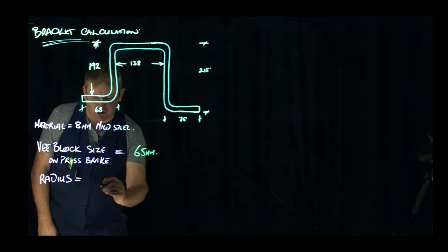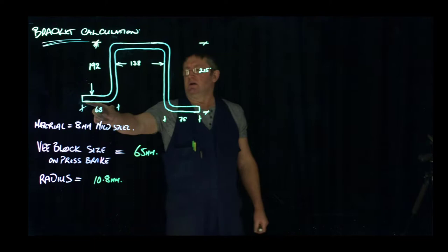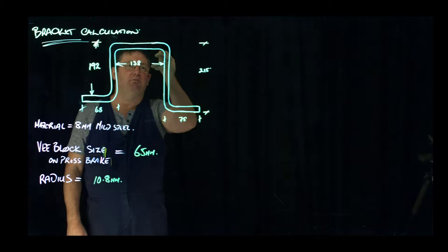So what we have to do when we have a bracket like this is break it down into its constituent parts. So we have a straight here, and then a bend, and a straight, and a bend, straight, bend, straight, bend, and a straight. So what we want to do is draw in where our radius would start and finish.